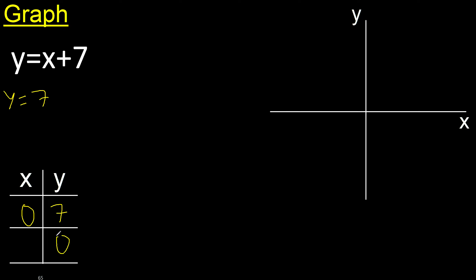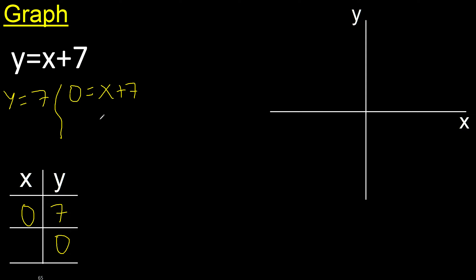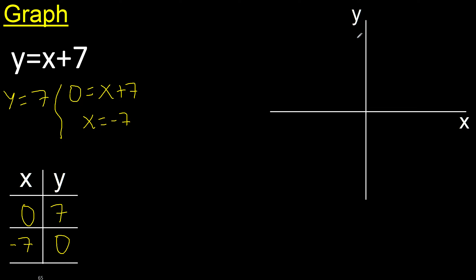For example y is 0. So 0 equals x minus 7. y is 7 positive. 7 is here, x is 0, 0 is here. Therefore the point is here.